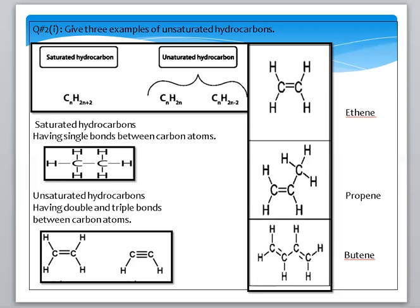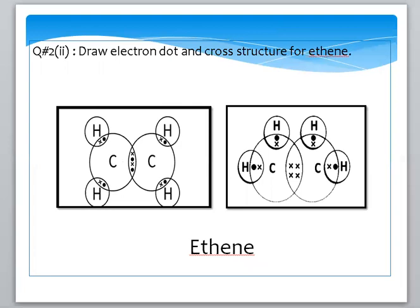The next question is to draw the electron dot and cross structure of ethene. Ethene's formula is C2H4. In the dot and cross structure, we represent the central atoms and their bonding electrons. Here, carbon and carbon are connected by a double bond.